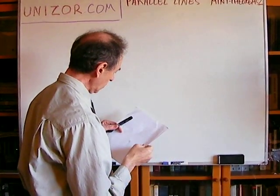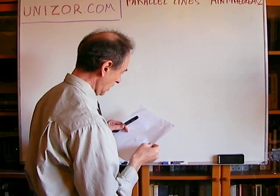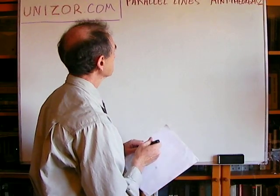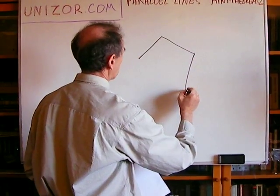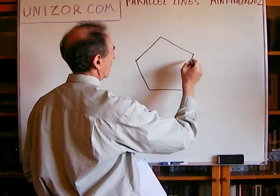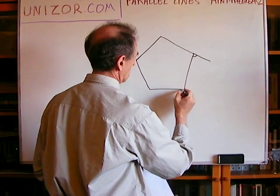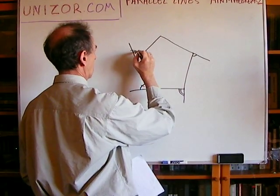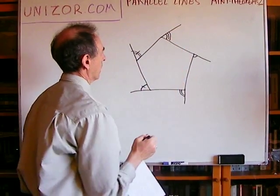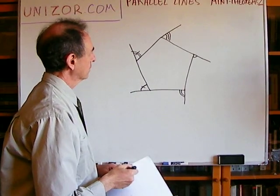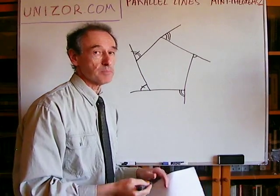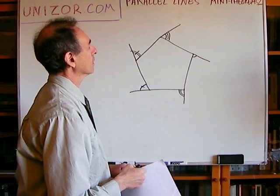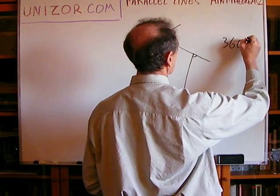The sum of all exterior angles of a convex polygon — counting only one exterior angle for each vertex — with n sides equals 360 degrees. If you have a polygon and one exterior angle on each side, the sum of these angles — in this case five, but generally it doesn't depend on the number of sides as long as the polygon is convex — is supposed to equal 360 degrees.